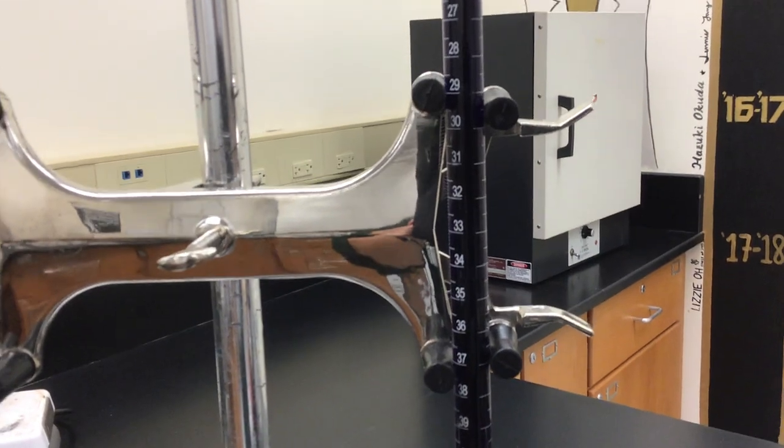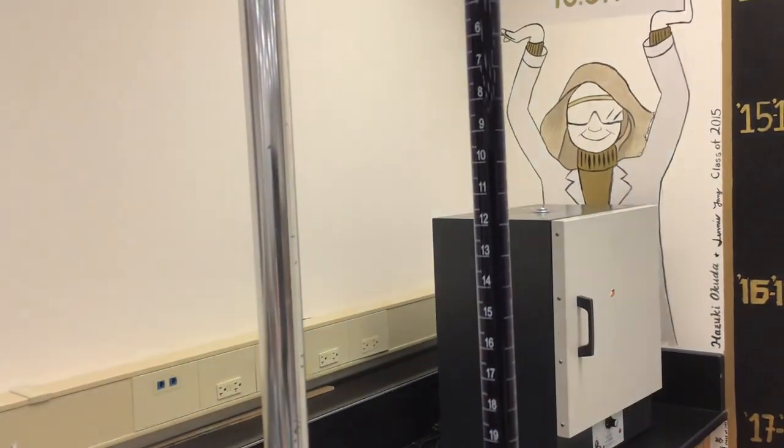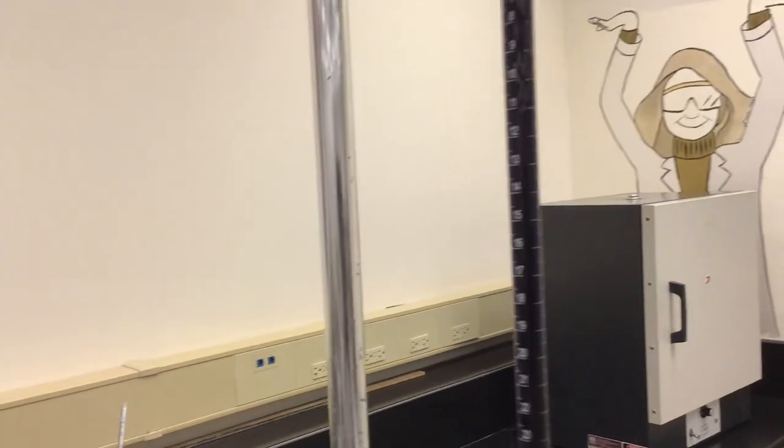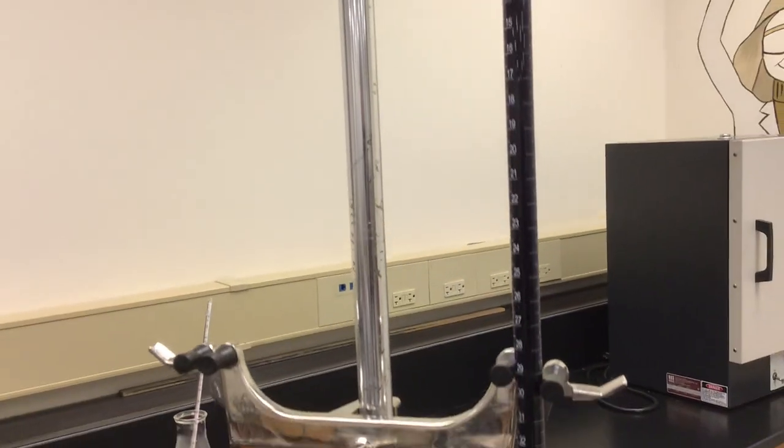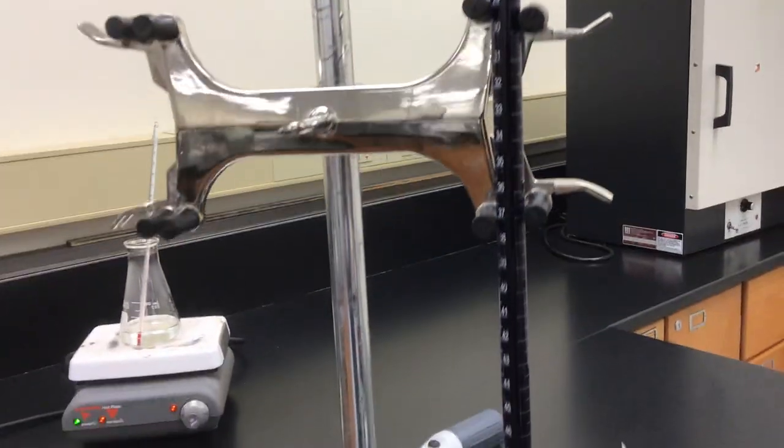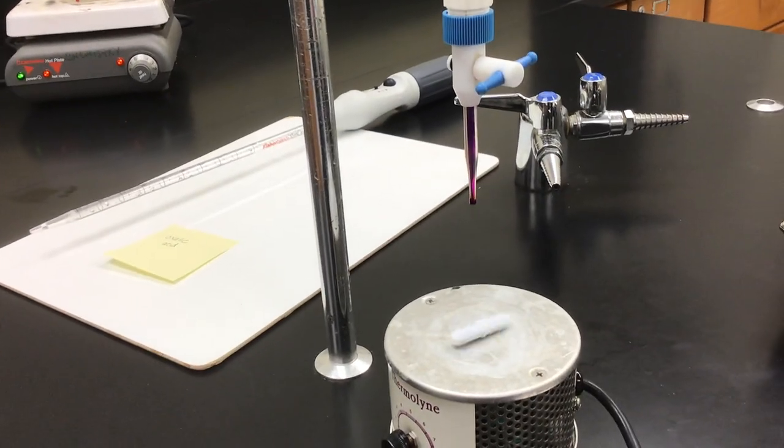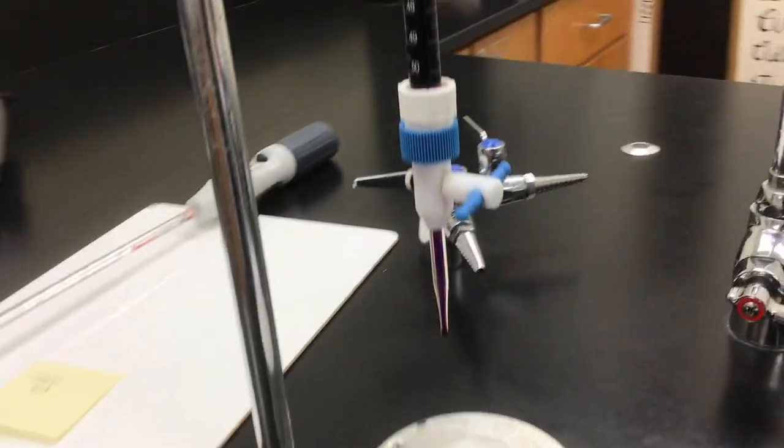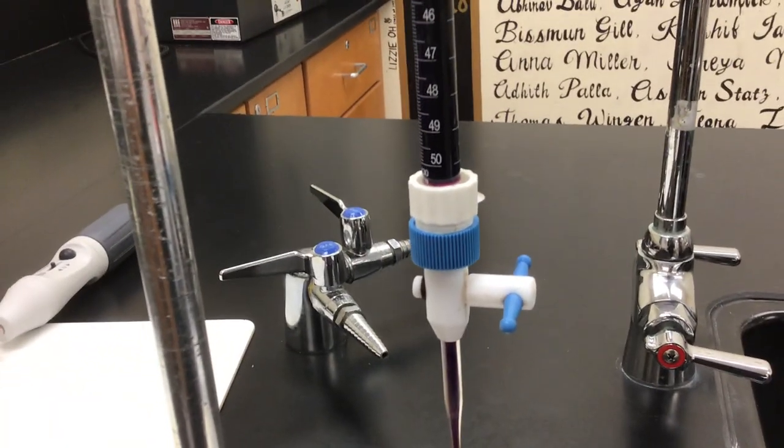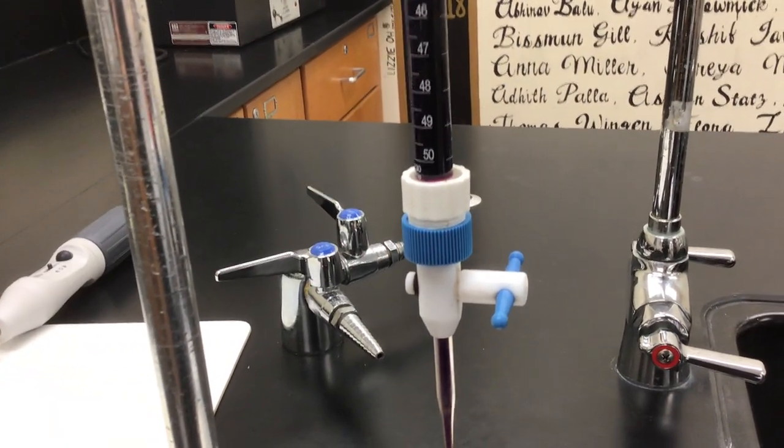The reason why that is, is because when this burette is completely full, zero milliliters of our potassium permanganate solution would have ended up in the flask that will eventually be down below. When we hit the 50 down here, that means that 50 milliliters has been added.